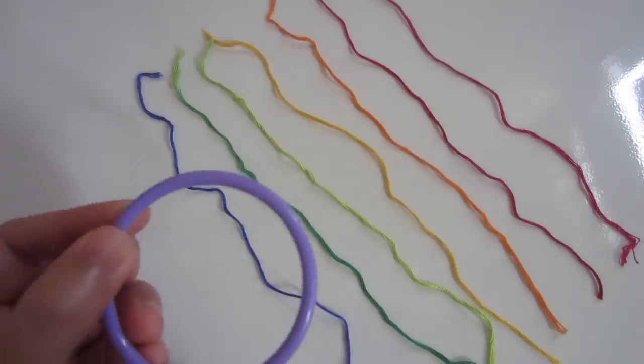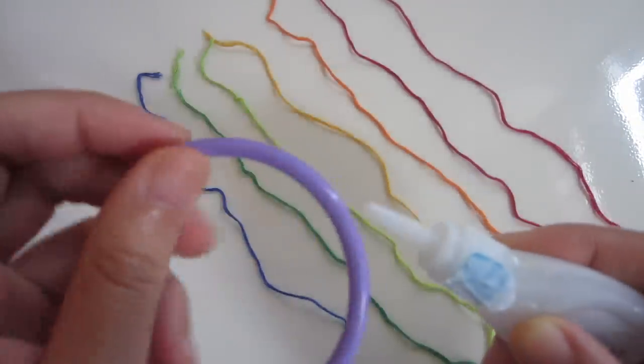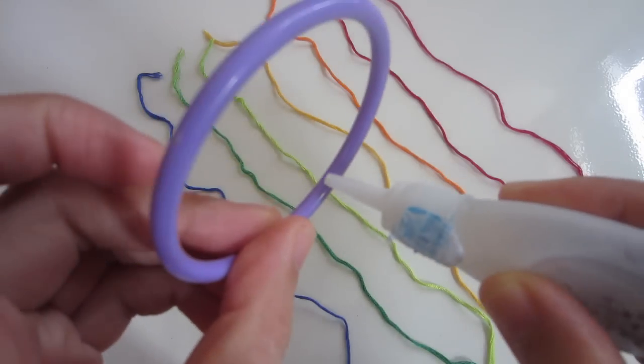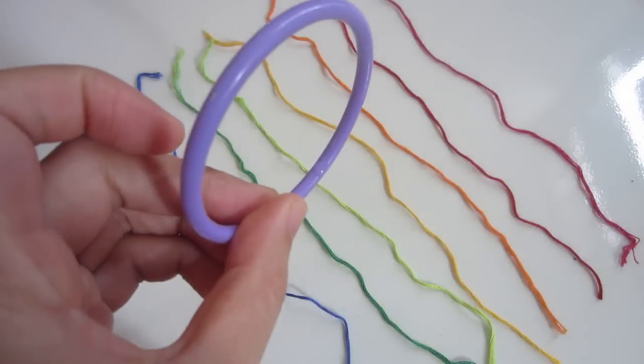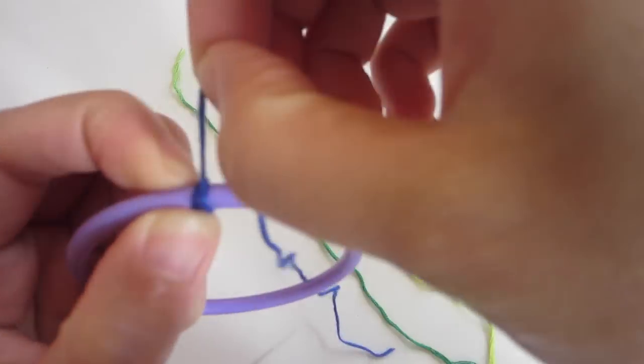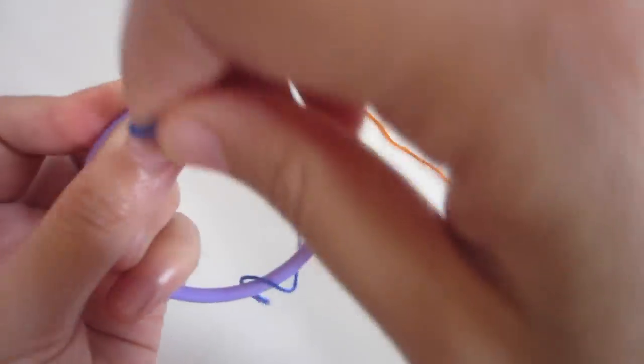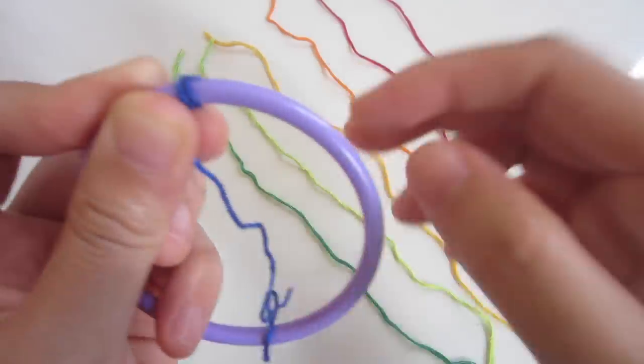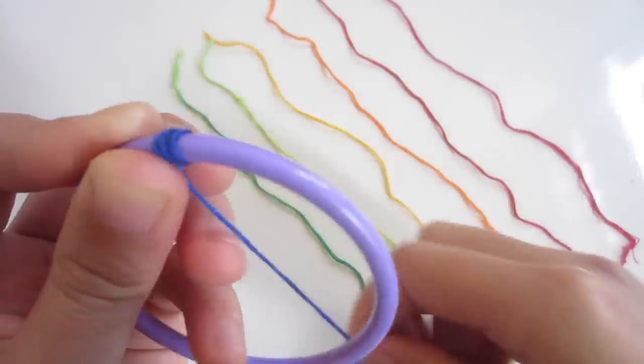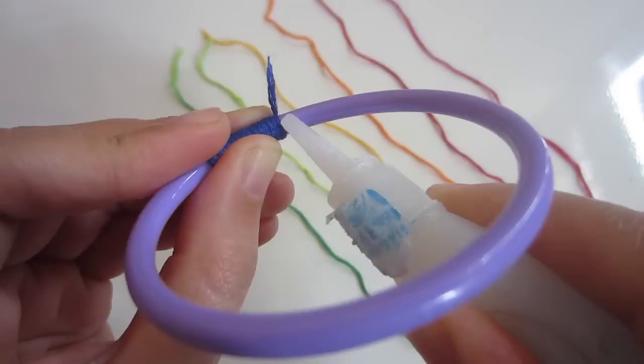Apply a tiny amount of glue on the inside of your bangle. Place the thread onto the bangle and start wrapping it around. Make sure you don't leave any gaps. When you're done, use a dab of glue to secure the cord.